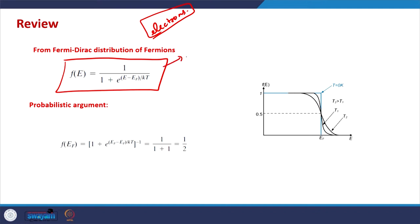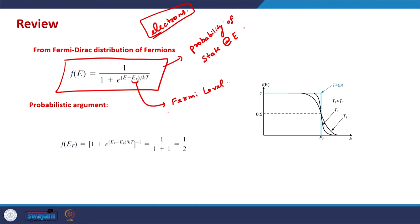The Fermi function is a function of energy and tells us about the probability of a state at energy E being occupied by an electron. It has an important constant known as the Fermi level. There are two ways to understand the Fermi level: first, it is the level below which all electronic states are filled at 0 Kelvin. Second, it is the level whose probability of being occupied by an electron is one-half.